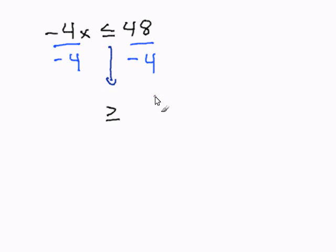Now, I simply continue with my problem. Negative 4 divided by negative 4 will cancel out, and that will leave x by itself.